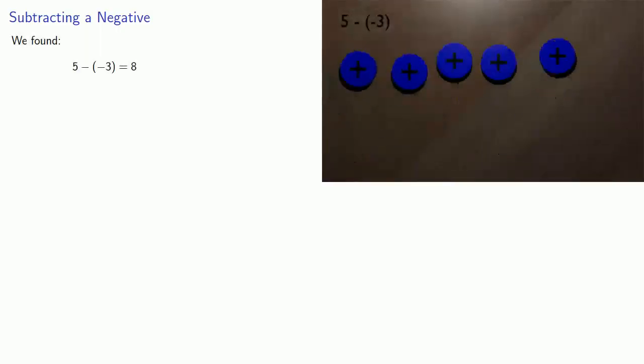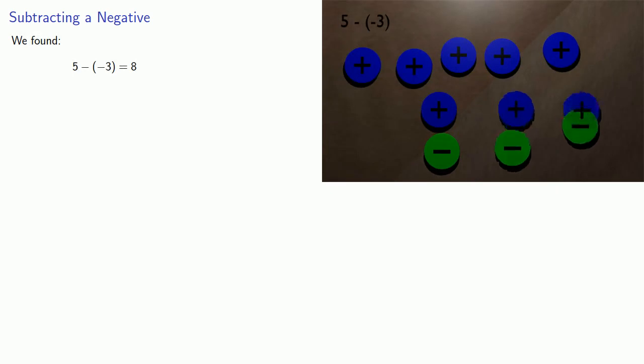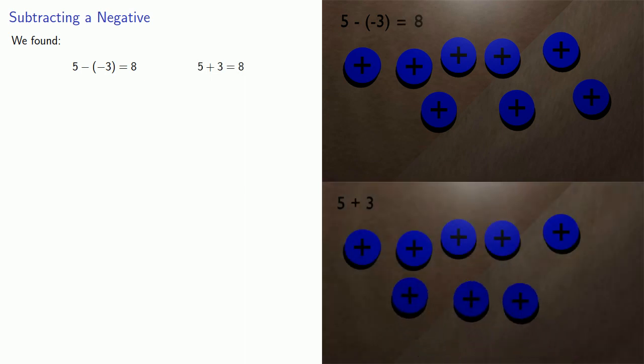And again, it's helpful to find the comparison. We found 5 minus the additive inverse of 3 is 8. And we also found that 5 plus 3 is 8. And we have the same numbers and the same result. And the only difference is that in one case we're subtracting an additive inverse.